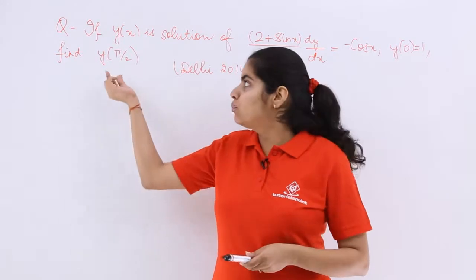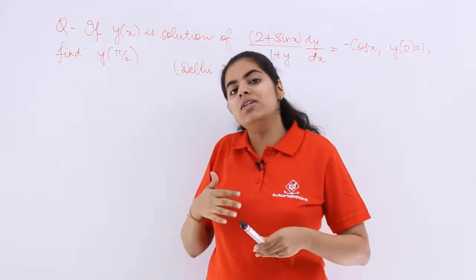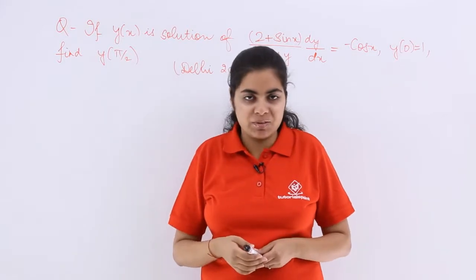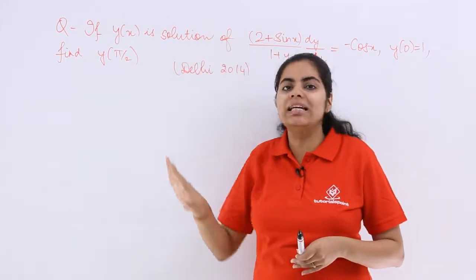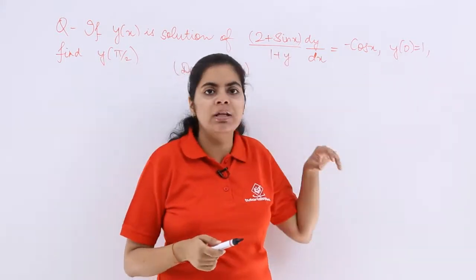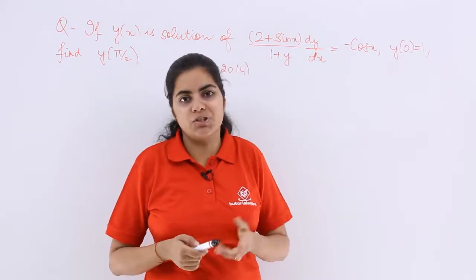But you have to find with those given conditions what is the value of y of pi by 2. That means when you put the value of x as pi by 2, what is the corresponding y? So first of all, when you have been given a differential equation and one condition, let's use the condition and solve this differential equation.